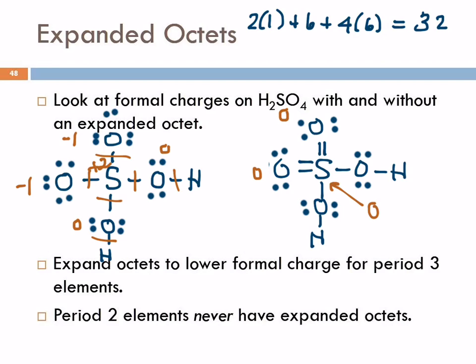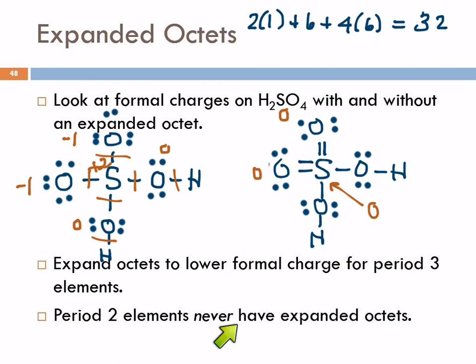Formal charges can guide us to the correct Lewis structure. Without formal charge analysis we'd say, well, it obeys the octet rule, that's what we're told to do. But the formal charges tell us that one's not so great. So here we have the correct structure. Period two elements never have expanded octets. When do you expand an octet? If you need to lower the formal charge for period three elements — and we're going to see that with phosphorus and sulfur, and in periods four, five, and six, that can happen as well.